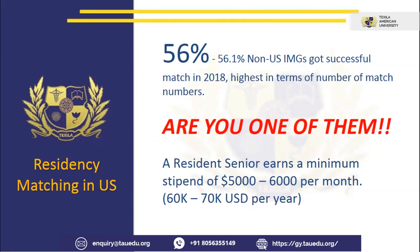A resident senior earns at least 5 to 6,000 USD per month — 60 to 70,000 USD per year. If you are a good neurosurgeon, you can earn 2 to 4 crores in a year. A normal physician earns up to 70 to 80 lakhs to 1 crore in a year. It all depends on your hard work, your studies, and your concentration — that basically results in your earning at the end of the PG program.